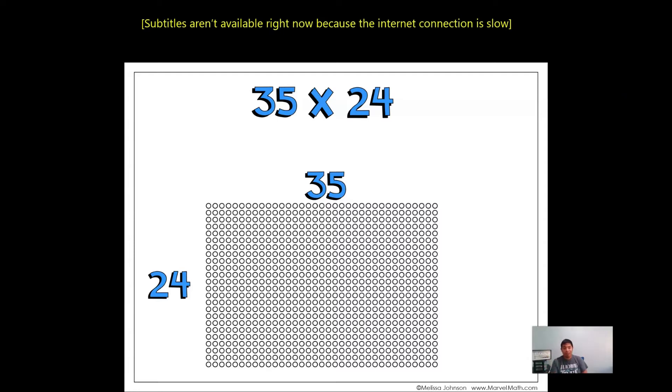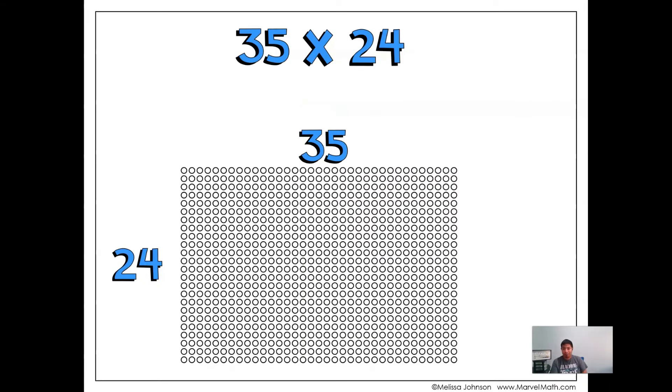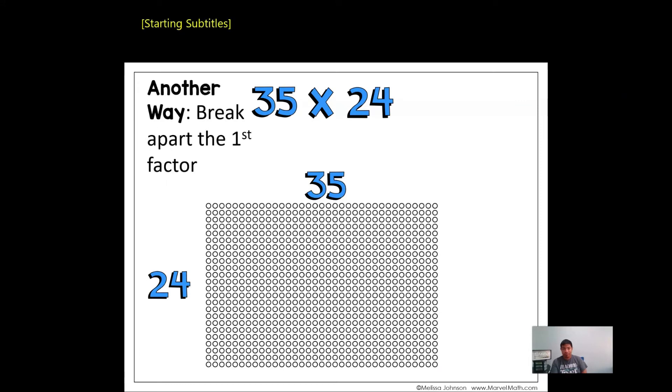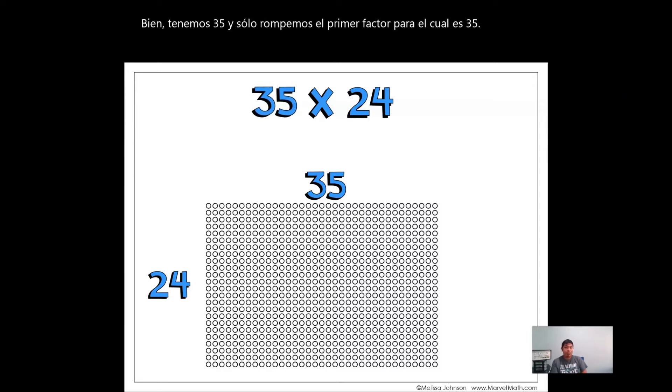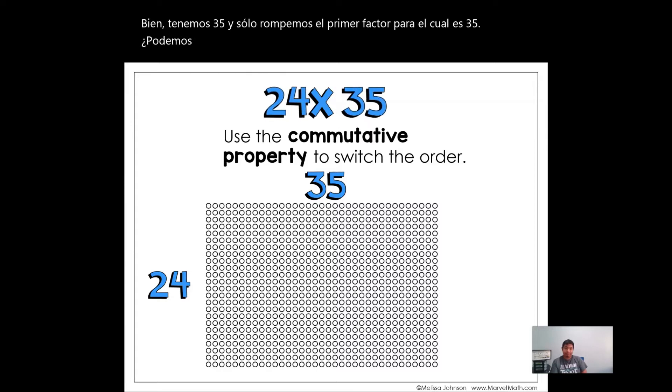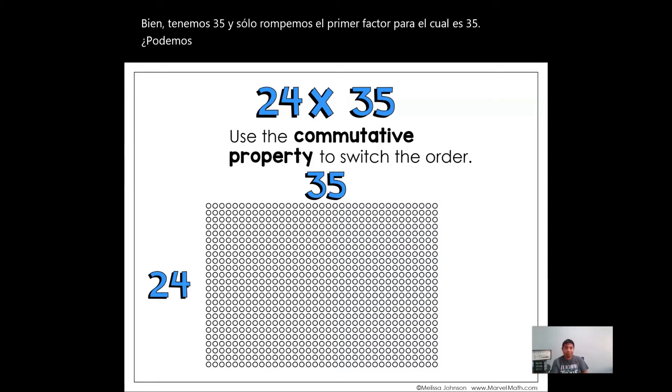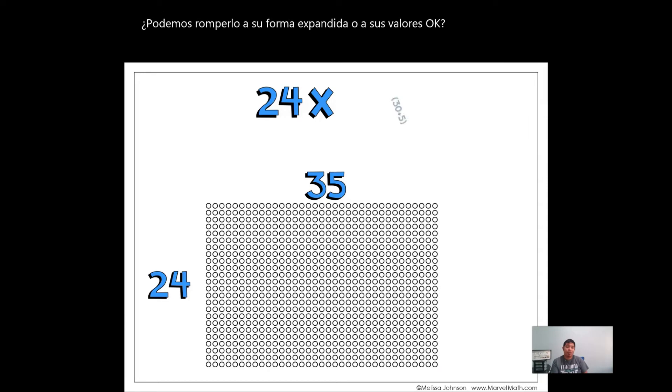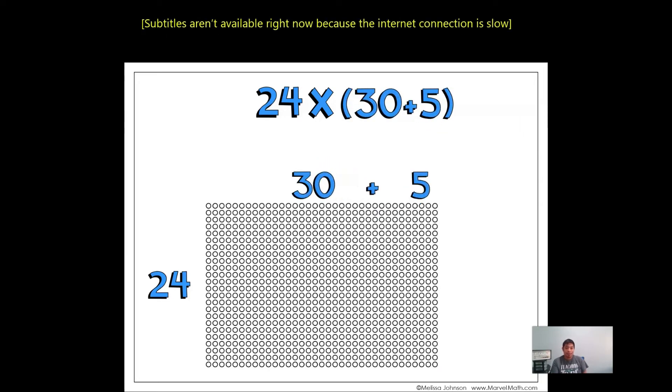So we have 35 and we just break the first factor apart, which is 35. And we break it to its expanded form or to its values. Using the commutative property to switch the order. Remember, commutative property means that it doesn't matter how the order goes, multiplication is multiplication. It works. So we get 30 plus 5.